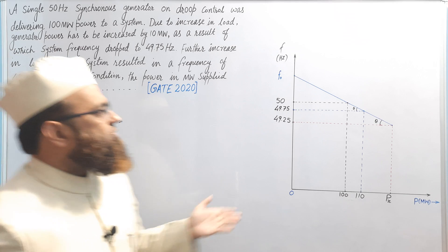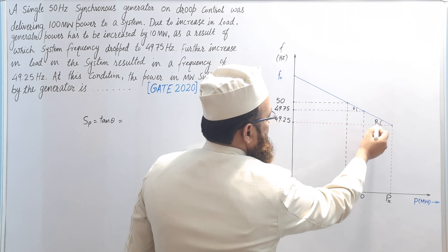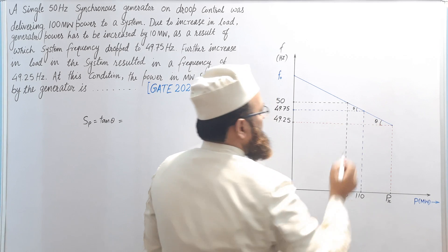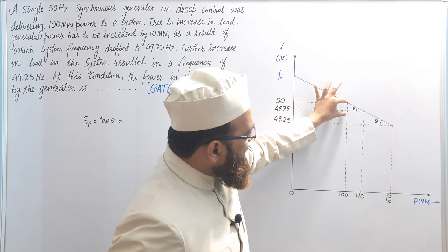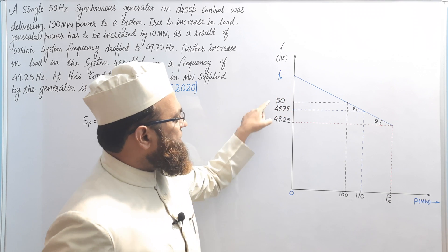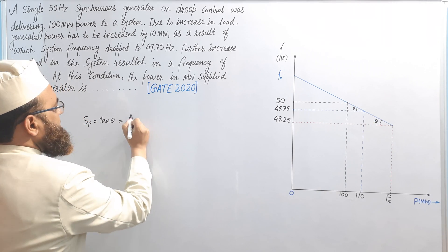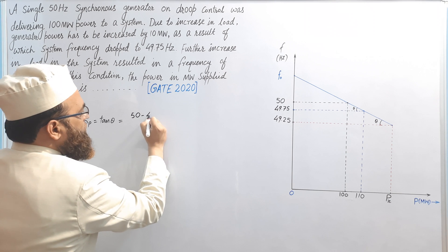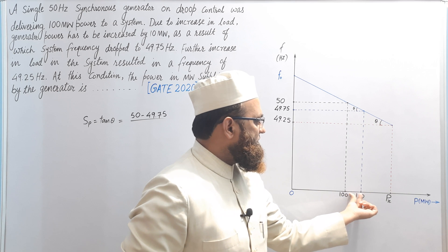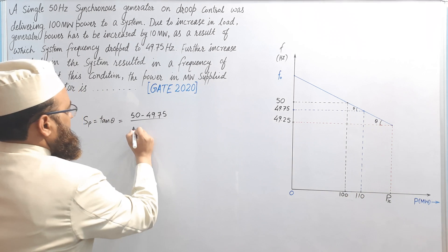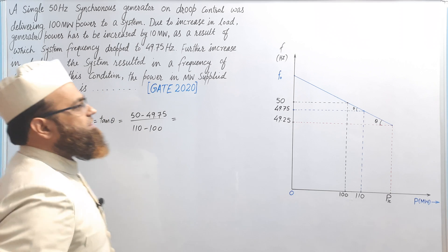We may evaluate tan θ from any of the triangles formed so far. Let us take the smaller triangle first. If this angle is θ, then in this right-angle triangle, the slope tan θ equals perpendicular upon base. The perpendicular is the difference of 50 and 49.75, and the base is the difference 110 minus 100 megawatt. So tan θ equals (50 − 49.75) upon (110 − 100).